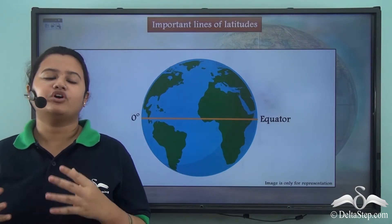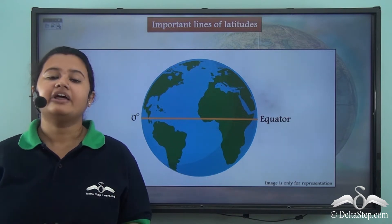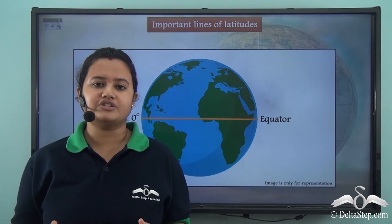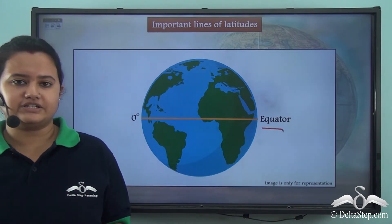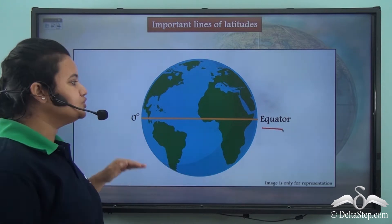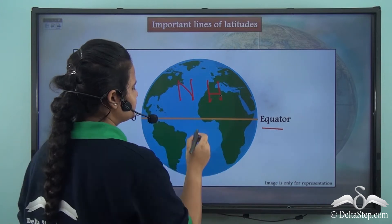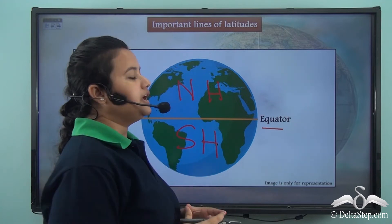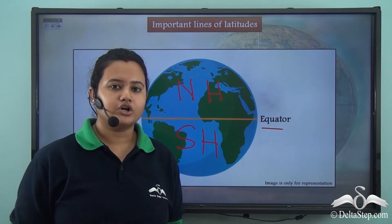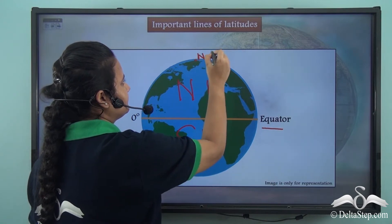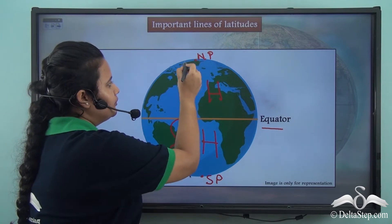In our previous lessons, we have already learnt about the definition or meaning of latitudes. Latitudes are imaginary horizontal lines drawn on the surface of a globe. The equator is an important line of latitude that divides the earth into two equal halves. The northern half is called the Northern Hemisphere and the southern half is called the Southern Hemisphere. The equator is also at an equal distance from both the North Pole and the South Pole.